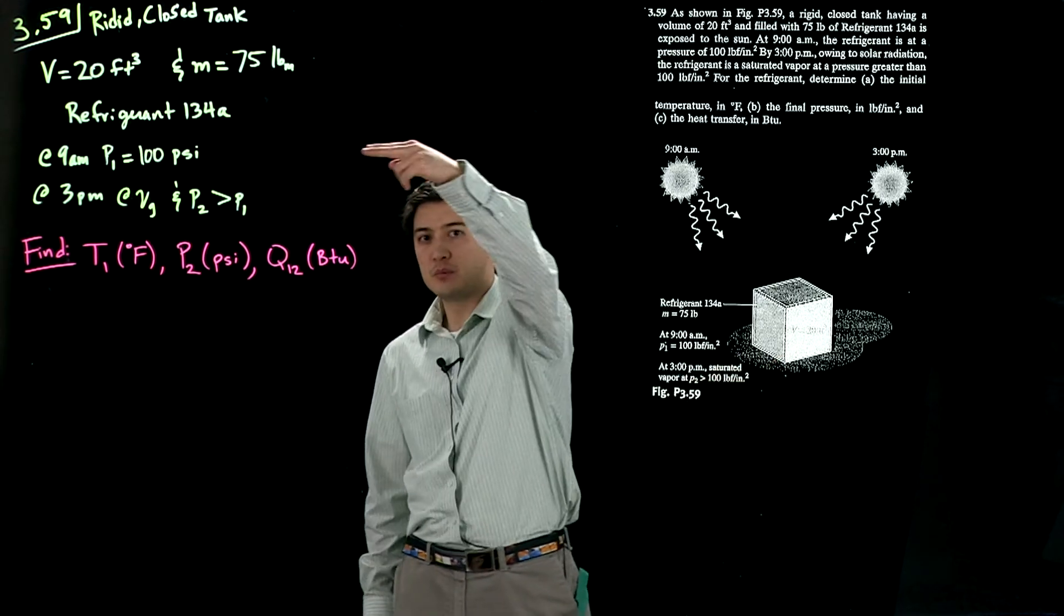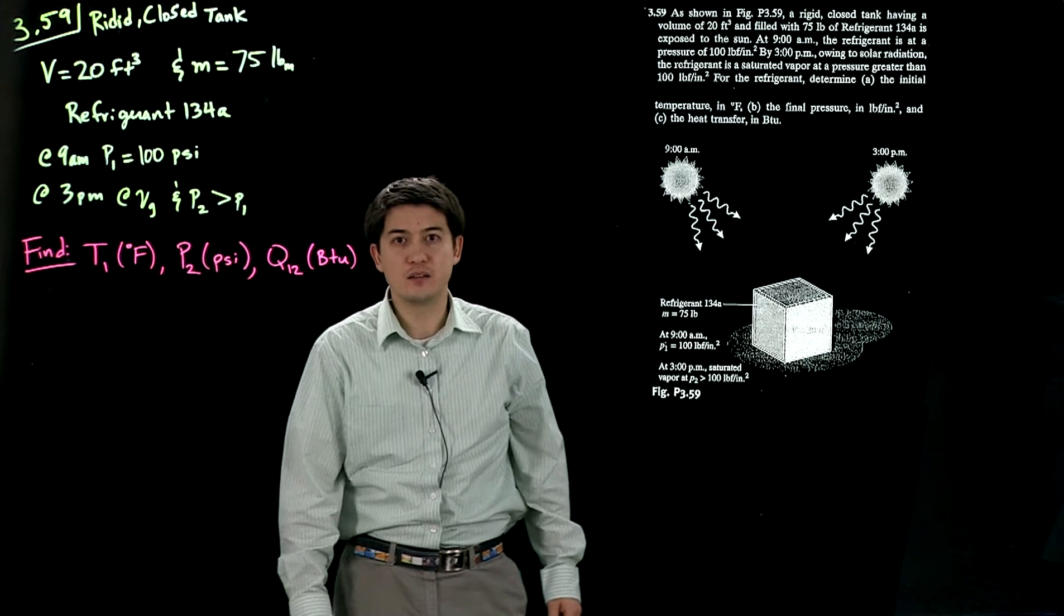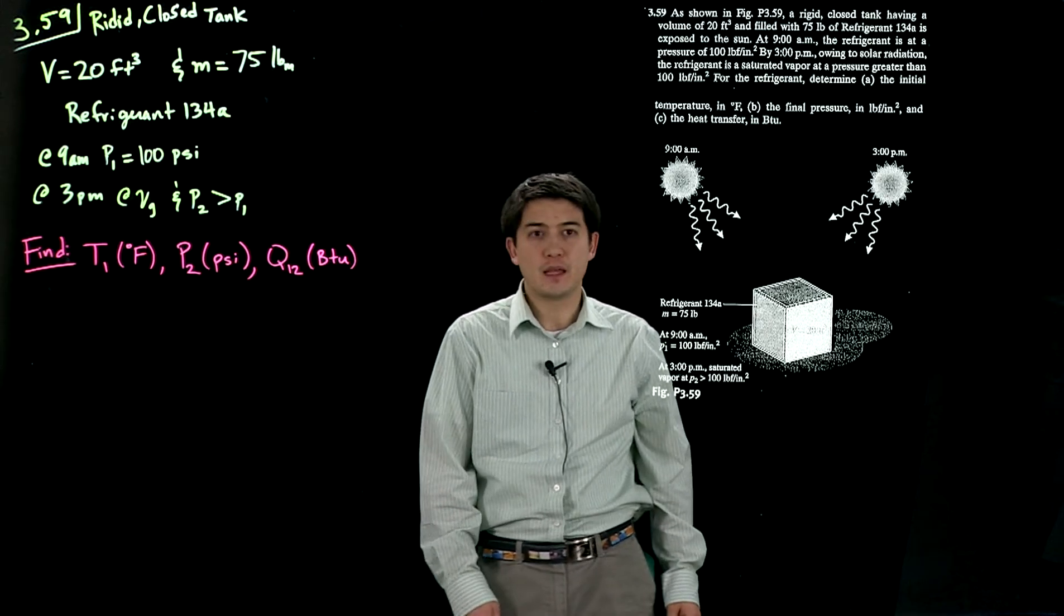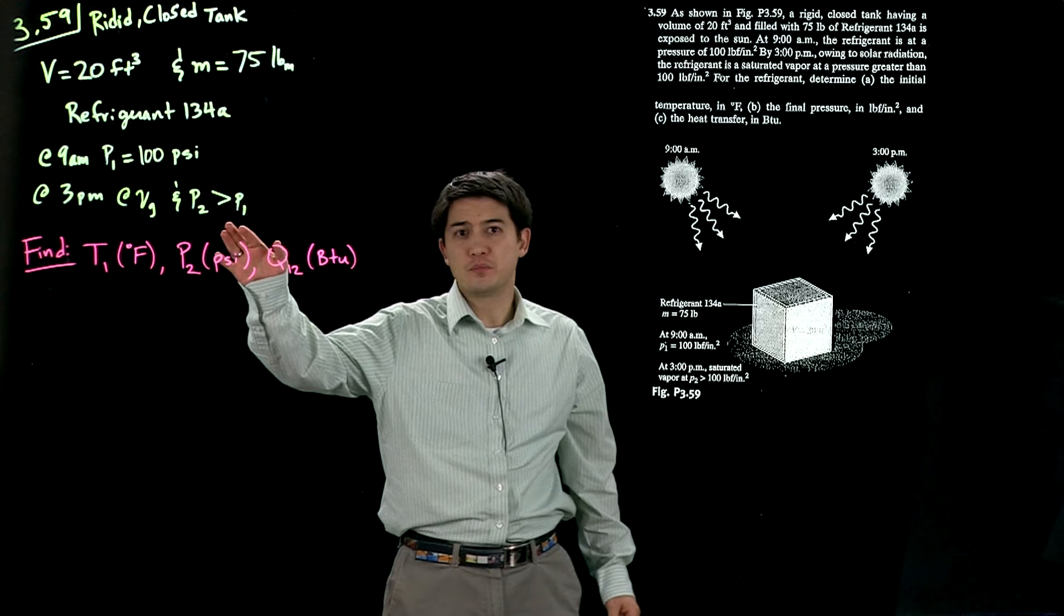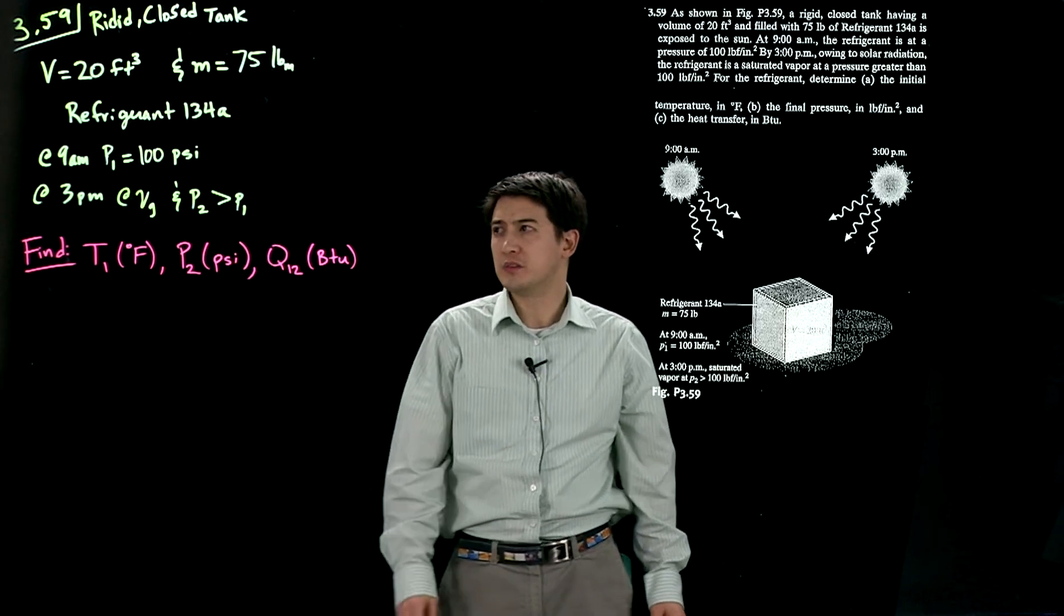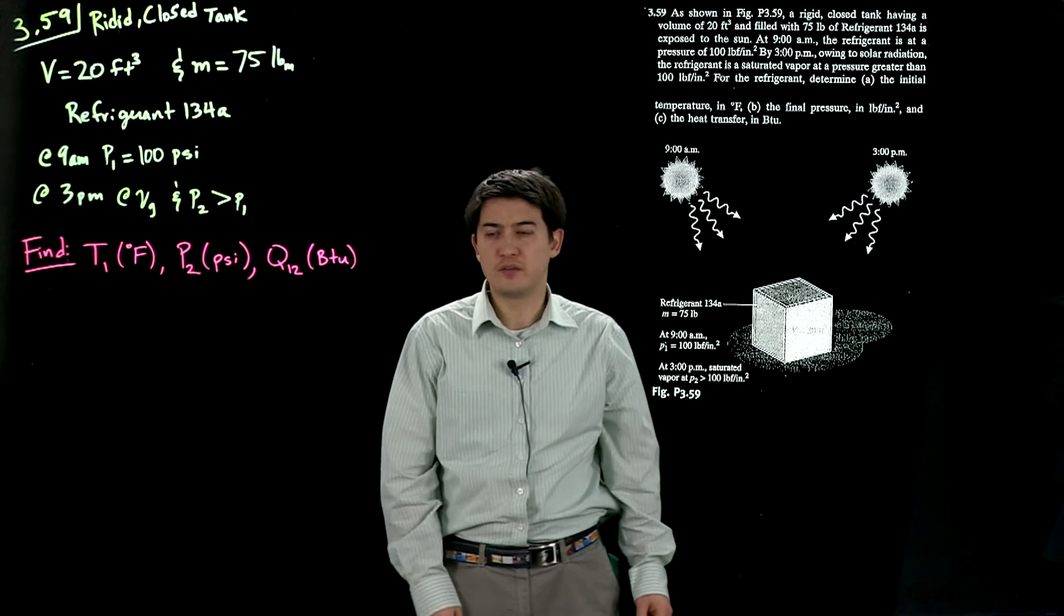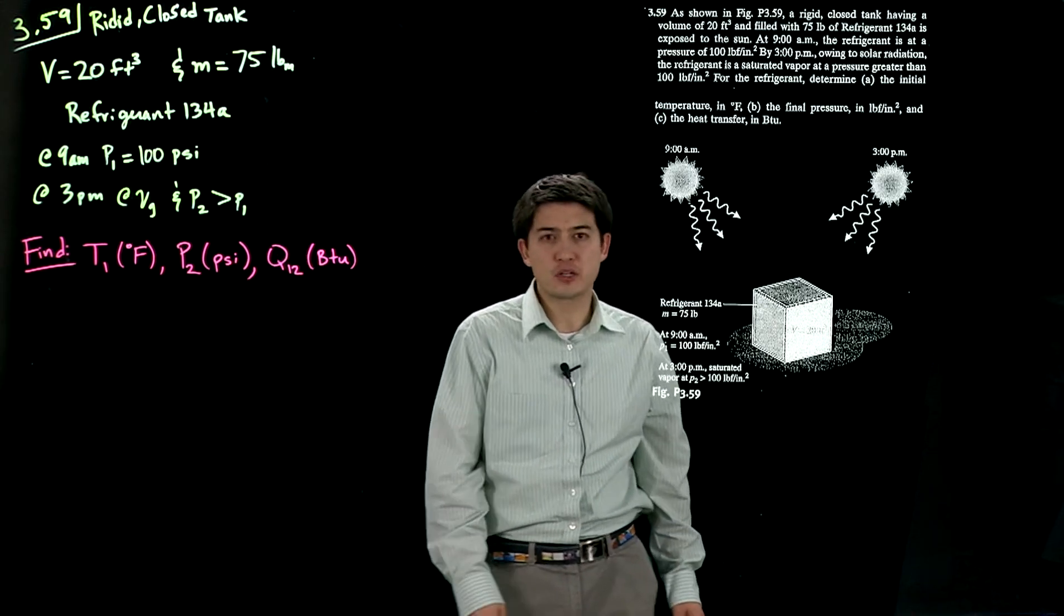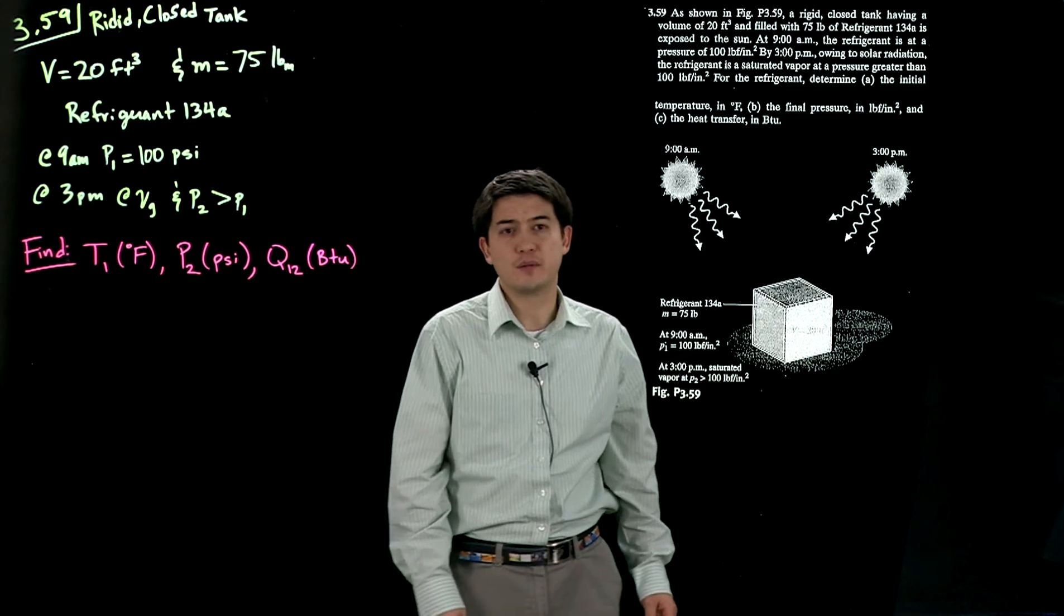At 9 a.m., the pressure inside is at 100 pounds per square inch, 100 psi. And this thing is heated throughout the day. At 3 p.m., the specific volume has reached the saturation of vapor volume. And we know that the pressure at state 2 is greater than the initial pressure that we started with. That's all that we're given.